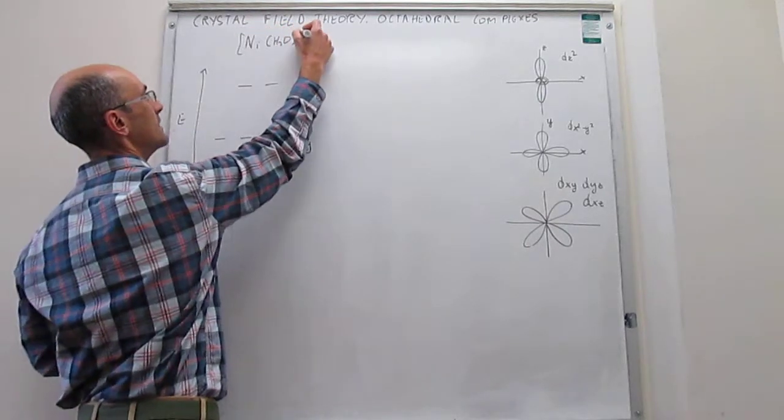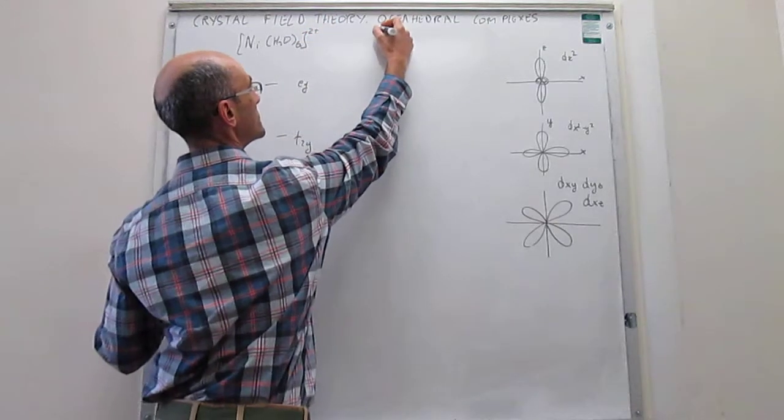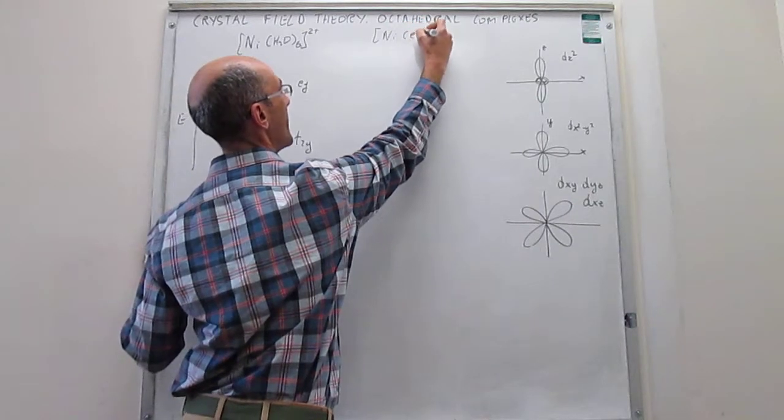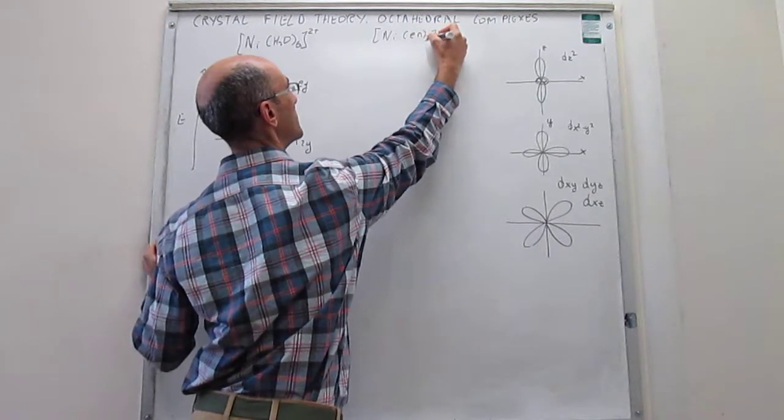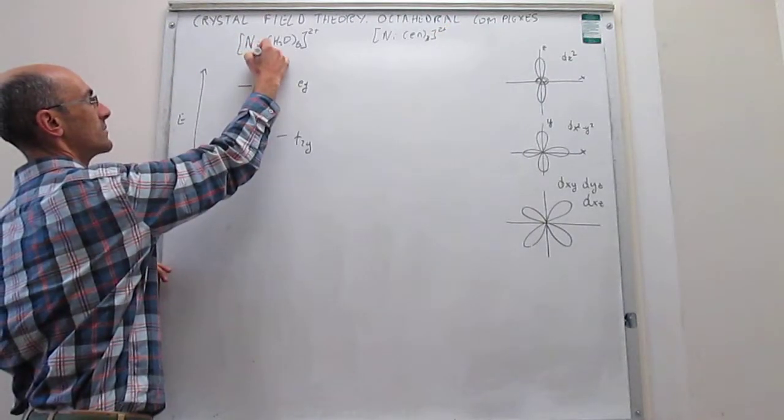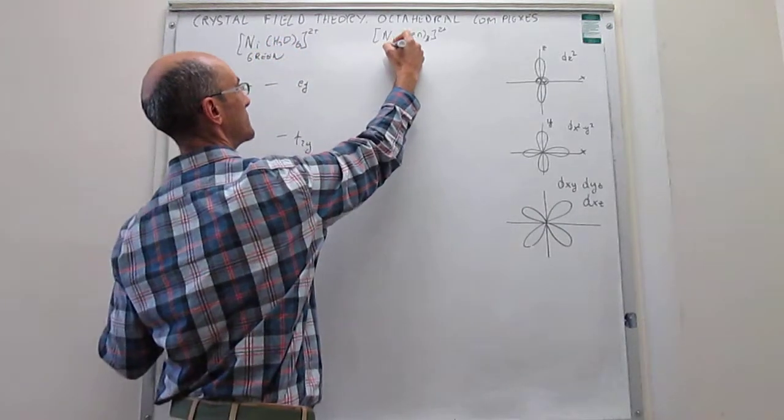This is going to be hexa-aqua nickel(2+) and this is going to be tris-ethylenediamine-nickel(2+). It turns out that this complex is green and this complex is blue.